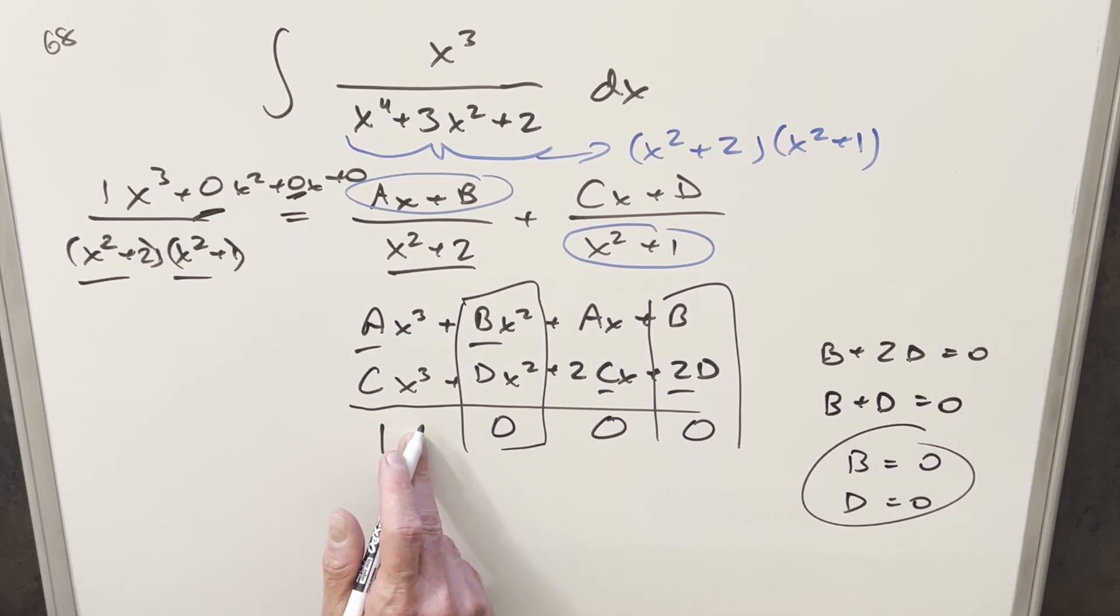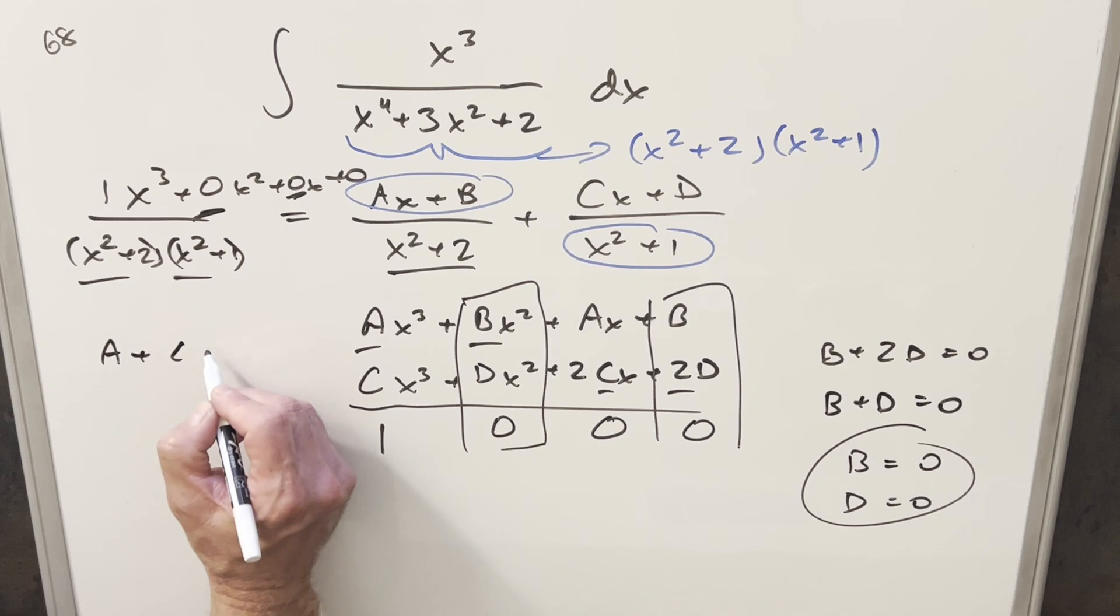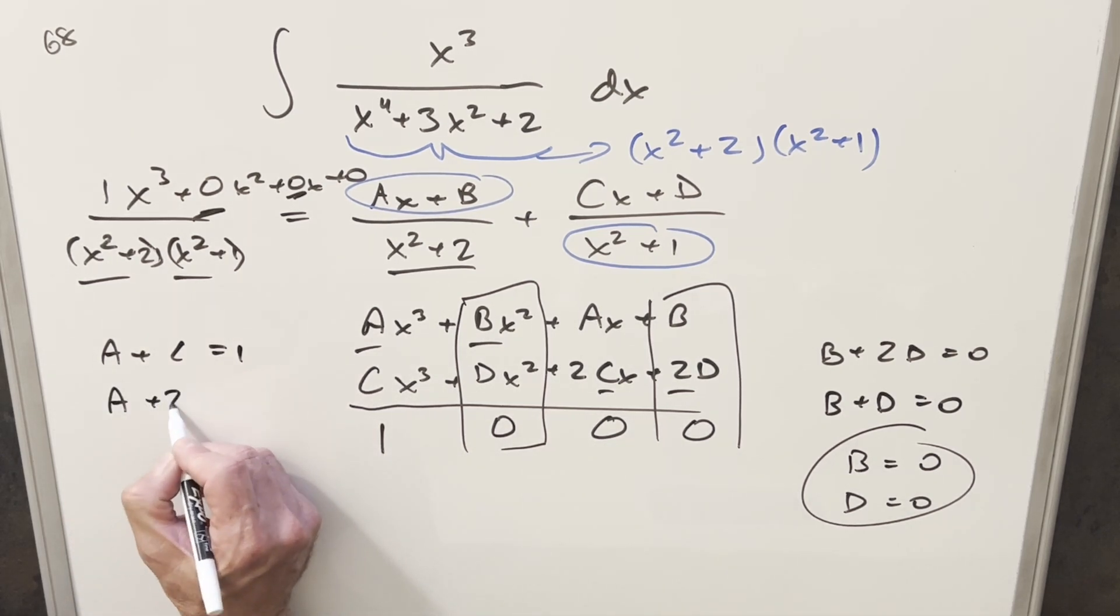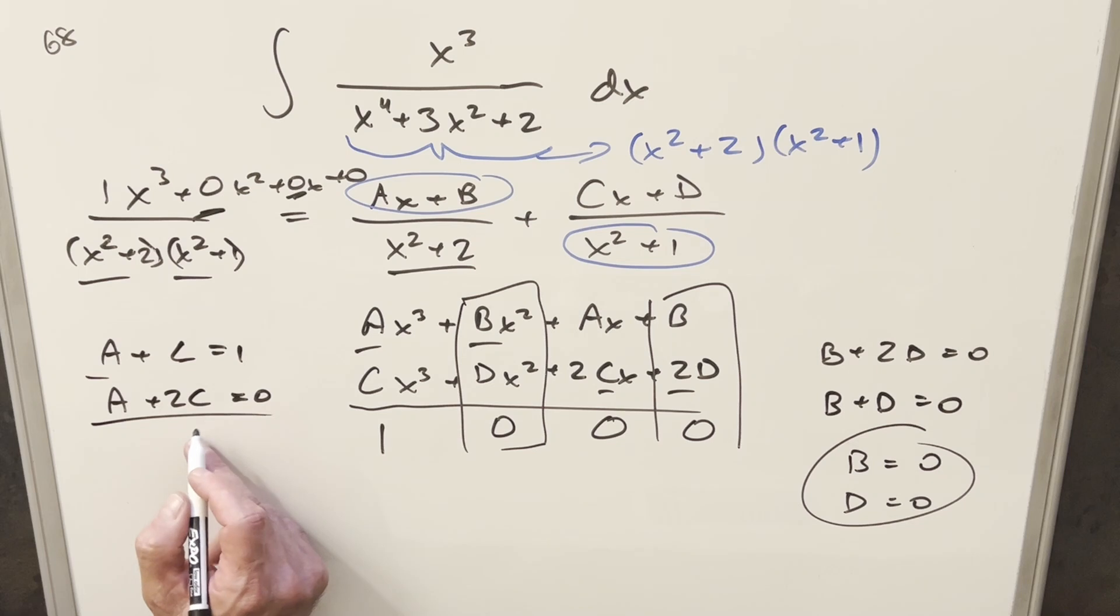Then we have these other two equations for our a and c value. So using this first one, we're saying a plus c equals 1. And then over here, we're saying a plus 2c equals 0. And you can solve it however you want. But let's just subtract these two equations. The a's cancel. We end up with minus c equals 1. So that tells me my c value is going to be just minus 1. And then we can just go back to one of them. Let's just go back to this first equation. If c is minus 1, then a needs to be 2.